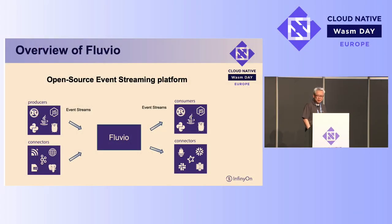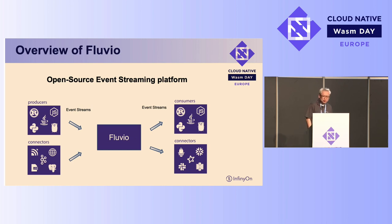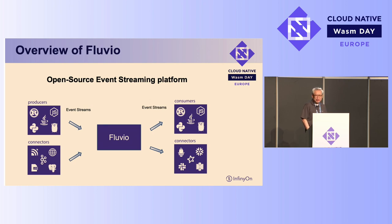Fluvio is an open source event streaming platform. We open sourced it in 2019. Fluvio is written in Rust and designed as a cloud-native platform from the ground up. The platform collects events from producers and stores and processes them to consumers and collectors. The producer can be written in many languages, such as JavaScript, Python, and Rust. The connectors can collect data from other databases or different platforms such as Kafka. The Fluvio platform can persist those events and dispatch to consumer and other data sinks.